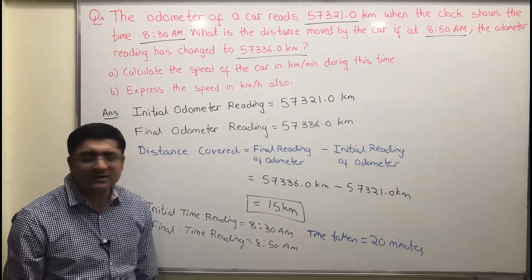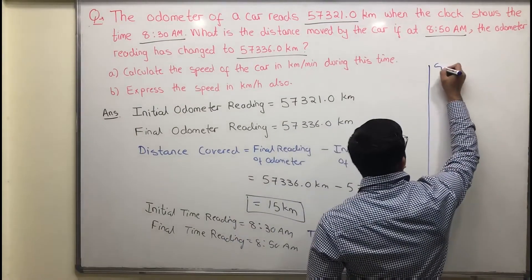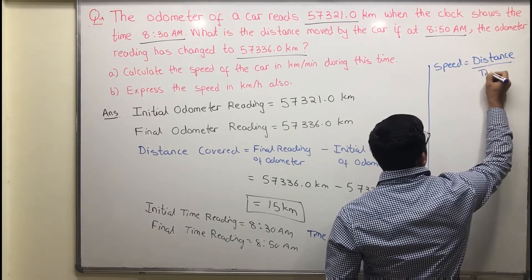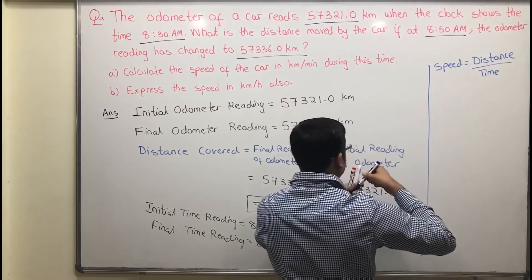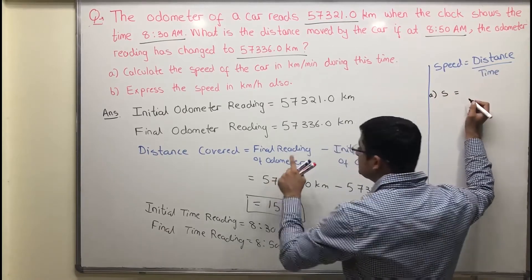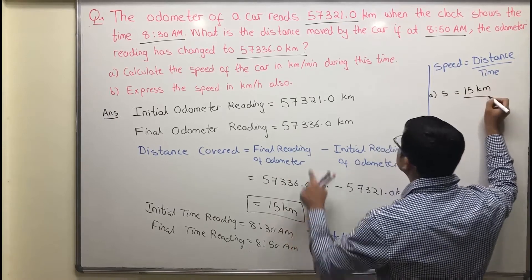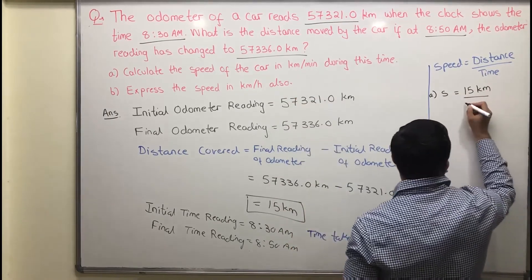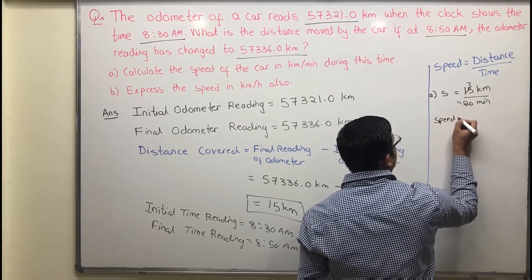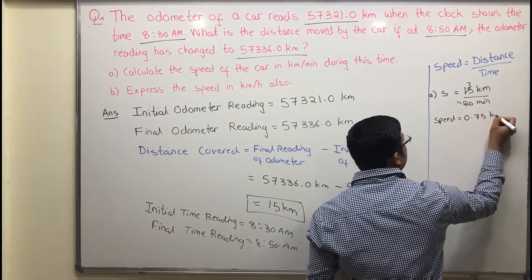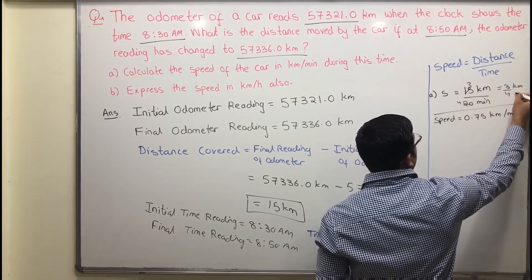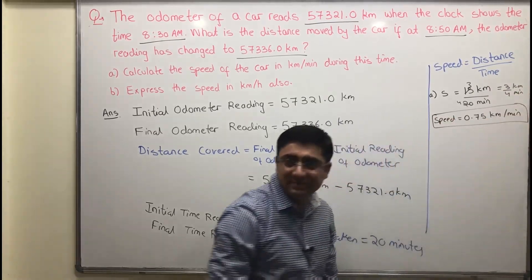We have the distance and the time, so we can get the speed. Speed equals distance divided by time. For speed in kilometers per minute, take distance in kilometers and time in minutes: 15 km divided by 20 minutes. Simplifying, we get 3/4, which is 0.75 kilometers per minute.